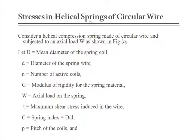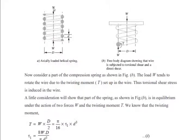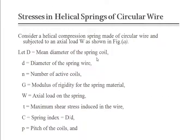Now we come to stresses in helical springs of circular wire. Consider a helical compression spring made of circular wire and subjected to an axial load W. Let D be the mean diameter of the spring, d be the diameter of the spring wire, n be the number of active coils, G the modulus of rigidity, W the axial load, tau the maximum shear stress, and C the spring index equal to D divided by d, where p is the pitch of the coils.